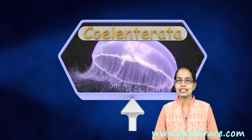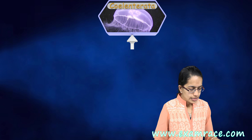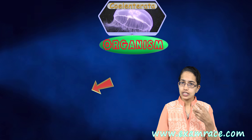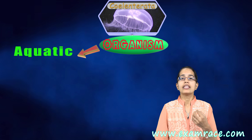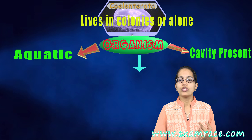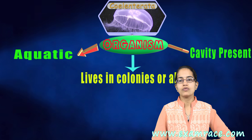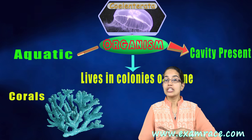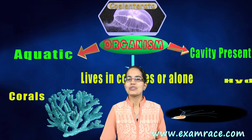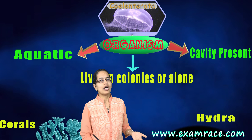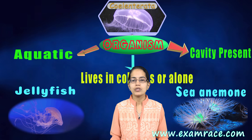Under Coelentrata, you have organisms that are present in water. They have a cavity and can either live alone or in groups — colonies, as we call them. Coral is a good example that lives in a colony. Hydra is a good example that lives alone. Beyond that, you also have jellyfish and sea anemone, which are examples of Coelentrata.